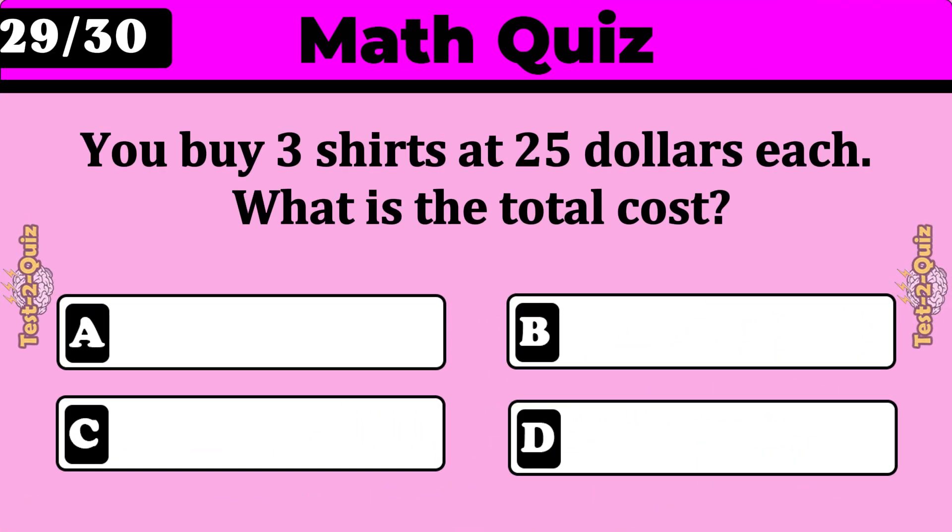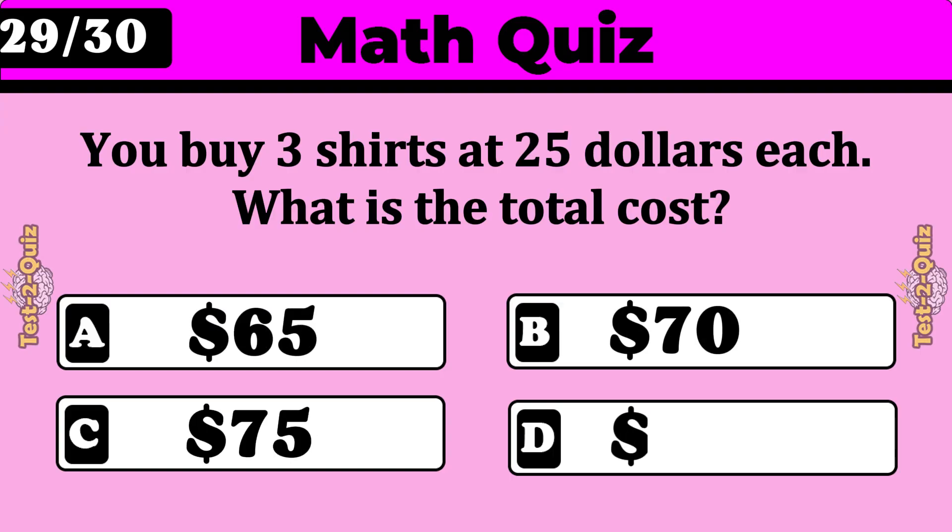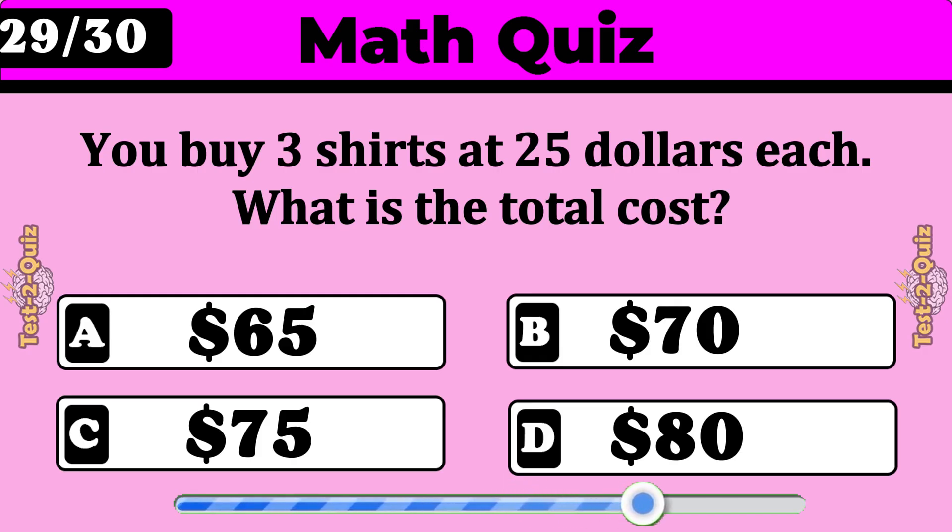You buy three shirts at $25 each. What is the total cost? $75.